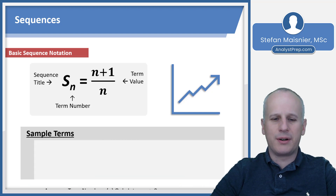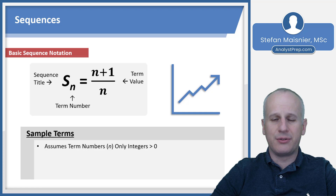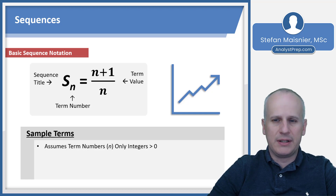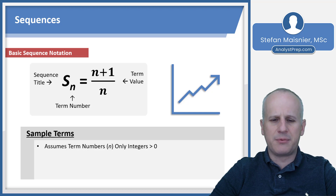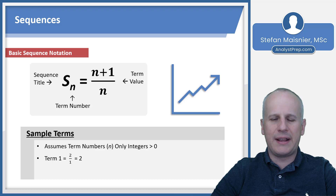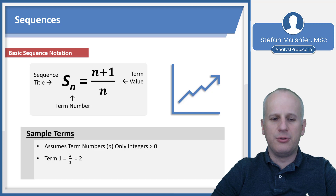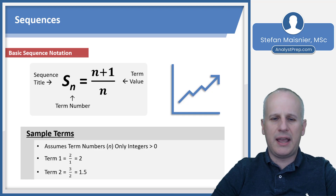Term numbers — the n — are only integers greater than zero. You can't have a negative term number because it wouldn't exist, and you can't have a fractional term number for the subscript. For instance, term 1: plug 1 in for n, so you get 1 plus 1 over 1, which becomes 2 over 1, or 2. The second term would be 2 plus 1 over 2, which equals 3 halves or 1.5.